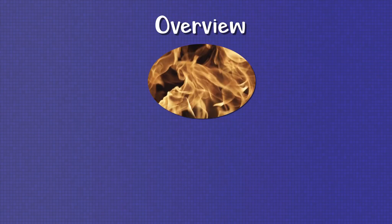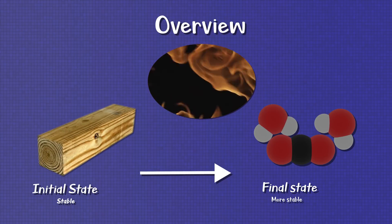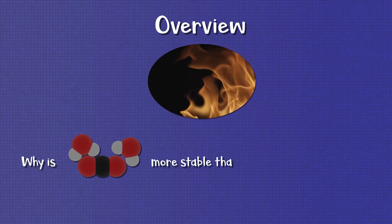So a fire occurs because the resulting products or end state is more stable than the initial reactants or energy state. But what causes this difference in energy states?